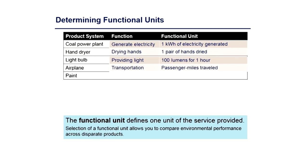An airplane's function is long-distance transportation, so again we might see passenger miles traveled. Paint is a tricky one. If comparing a cheaper paint that lasts three years with a more durable one that lasts five years, that duration of time is important. If the function of paint is to protect the exterior of your house, the functional unit should be years of coverage — not just the area covered, but how long it will serve that role. If the cheaper paint lasts three years and the more expensive paint lasts five years, you want to capture that in the functional unit to give an apples-to-apples comparison.